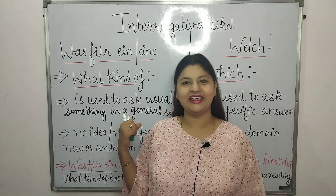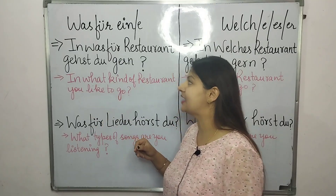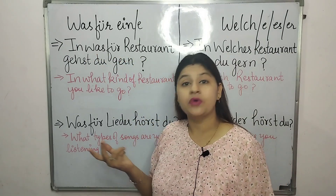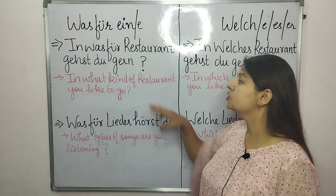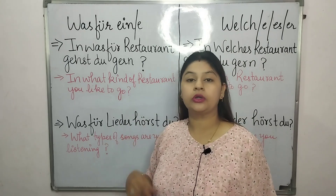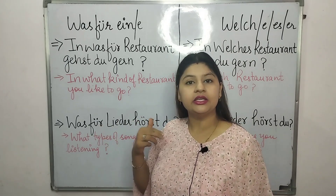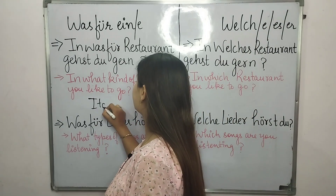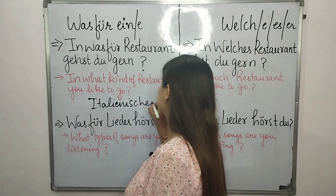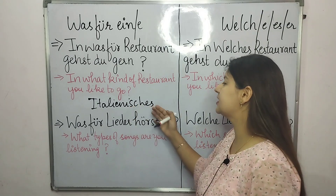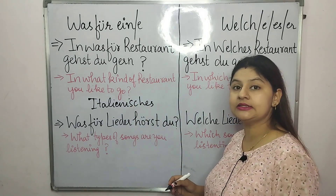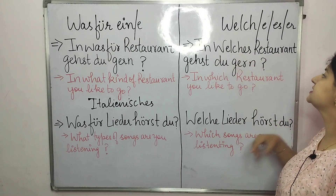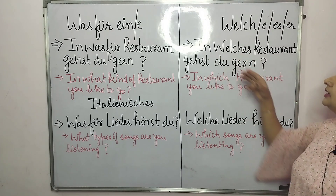Example one: 'In was für ein Restaurant bist du gegangen?' — what kind of restaurant did you go to? Here we don't have an idea of which restaurant, so I can give a general answer: 'Ich bin ins italienisches Restaurant gegangen' — I went to an Italian restaurant.